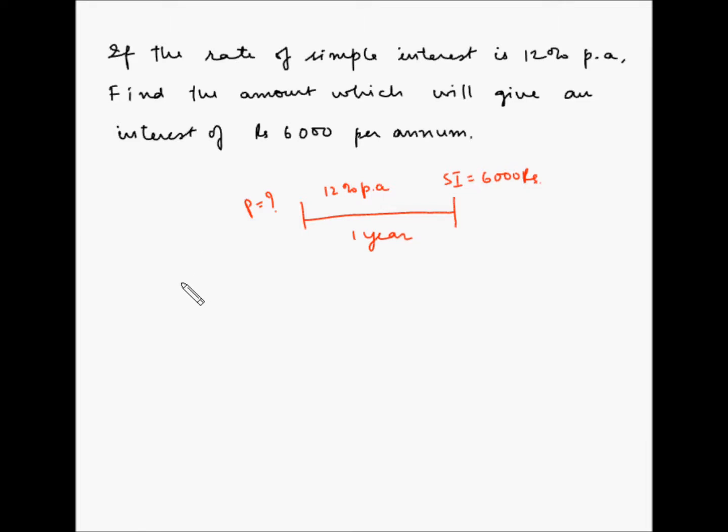Simple interest is equal to principal multiplied by the rate multiplied by the time divided by 100. So this is equal to the principal, which is P, multiplied by 12 multiplied by 1 divided by 100.